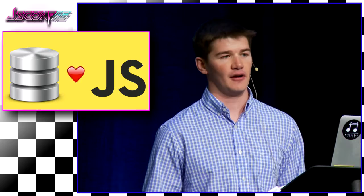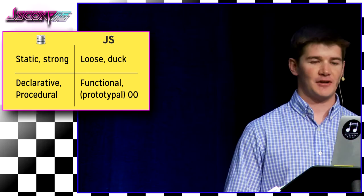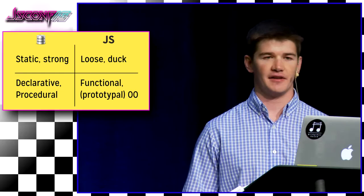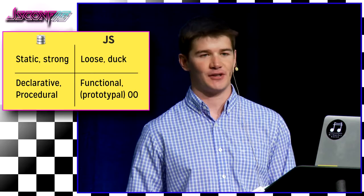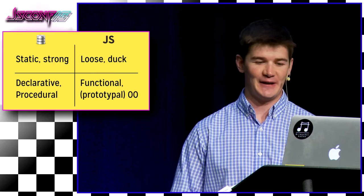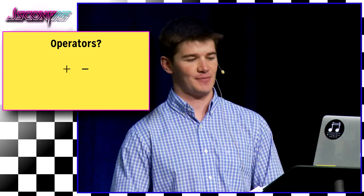I think it's really appropriate that we're talking about relational databases at a JavaScript conference, because I think there's a lot of similar features between the two. At a language level, maybe not so much — SQL is static and strongly typed, declarative and in some ways procedural. JavaScript is as loosely typed as you can get while still being a real programming language, with this weird hybrid of functional and prototypal object-oriented. It also shares some of the same operators, but even in JavaScript the operators don't always do what we want.